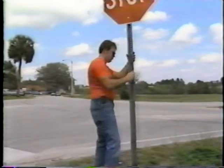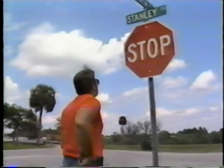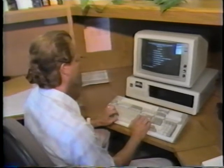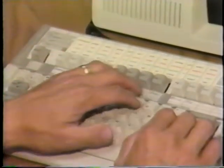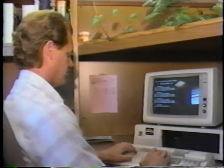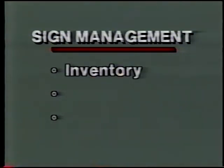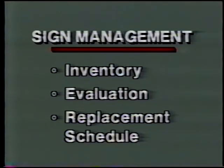What's the solution? While there's no quick fix, there are ways to begin to solve the many problems related to traffic signs. Many of today's traffic administrators are responding by developing sign management programs — systematic ways of evaluating, upgrading, and maintaining the quality of their traffic signs. Most sign management programs consist of three basic elements: first, an inventory of all signs within the system; second, an evaluation of the sign's condition; and third, a schedule of routine sign replacement.